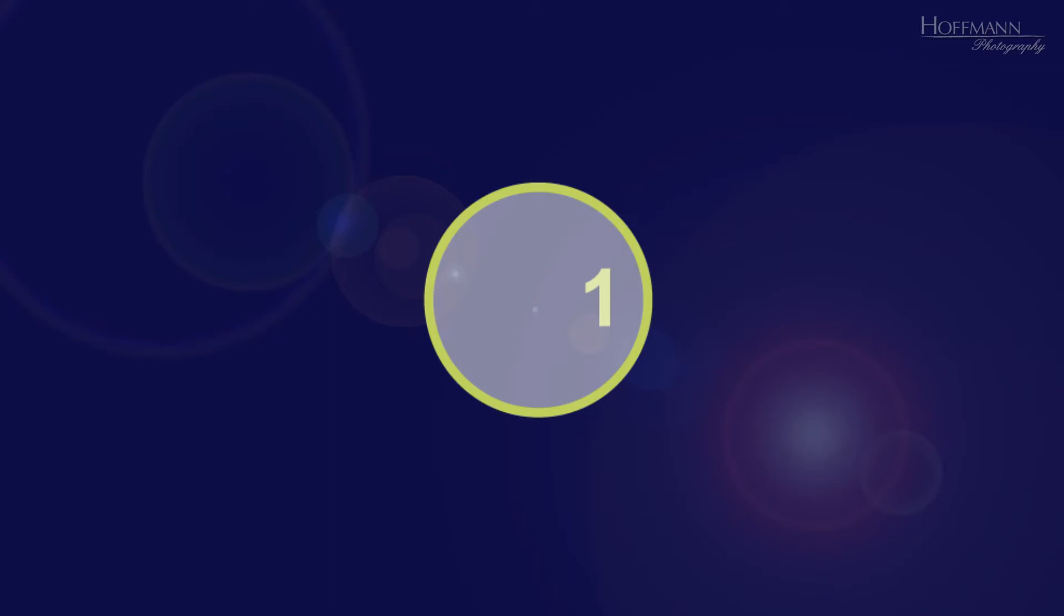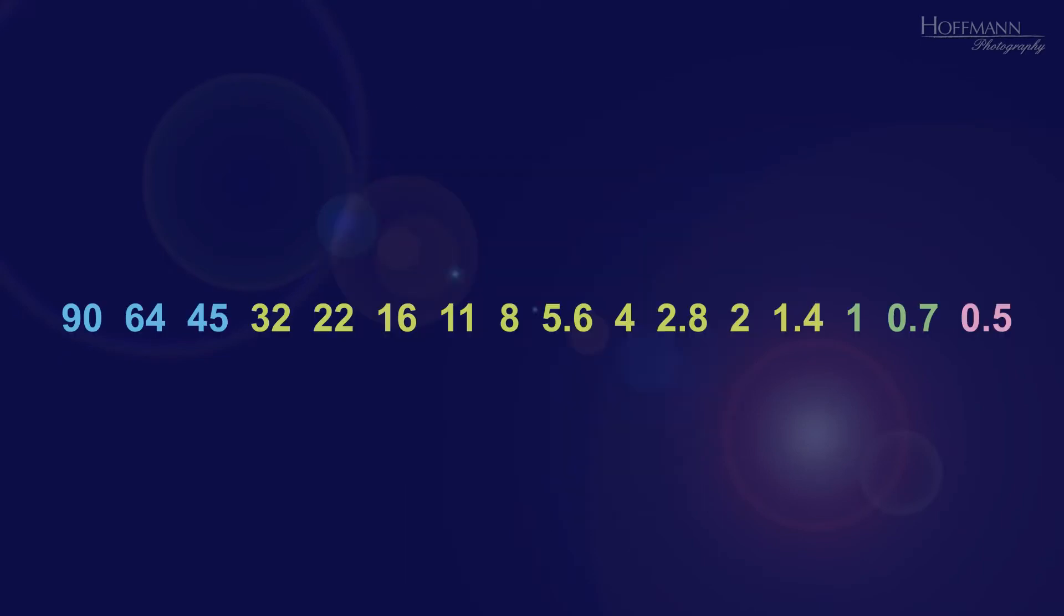Of course, the aperture of modern lenses is not square, but more or less circular. But this does not change the principle. Because doubling the diameter of the aperture results in 4 times the area. So if we want to double the area of the aperture, we need the intermediate value 1.4 again. And therefore, there are the non-integer values 1.4, 2.8, 5.6 and so on.